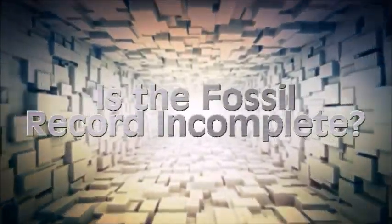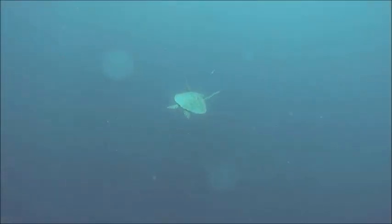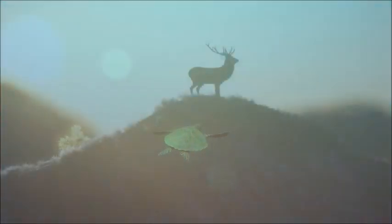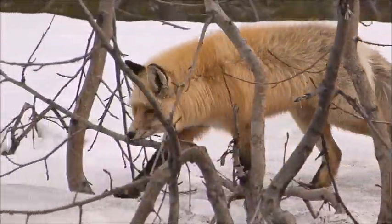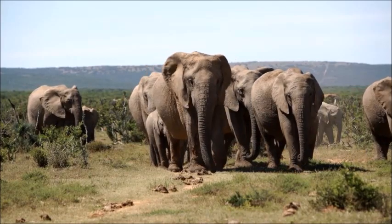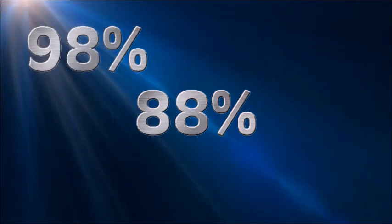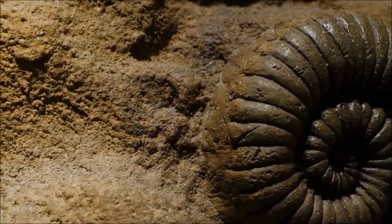Now evolutionists will object that the fossil record is incomplete. Certainly the fossil record is incomplete in the sense that every creature that ever lived has not been fossilized. However, for studying the history of life on Earth, we are concerned with the degree to which the fossil record represents the different types of organisms that have lived. When we test this by seeing how many known organisms are represented as fossils, the fossil record gives a remarkably accurate picture. Of the 43 known living orders of terrestrial vertebrates, 98% are represented as fossils. Of the known living families of terrestrial vertebrates not including birds, 88% are represented as fossils. At lower taxonomic levels such as genera, numbers drop to around 66%. But all of this indicates that the fossil record is reasonably accurate. Significantly more is preserved than is not.